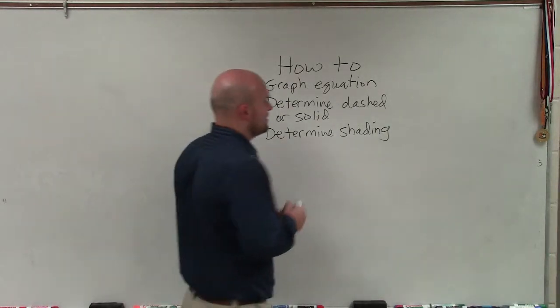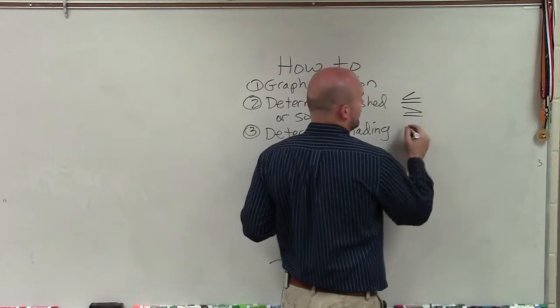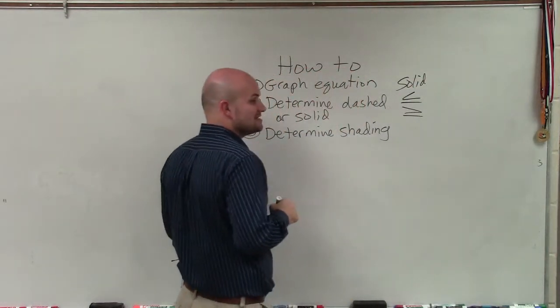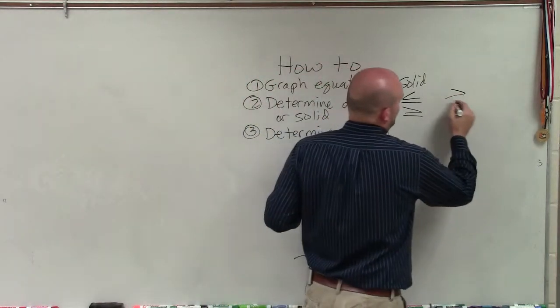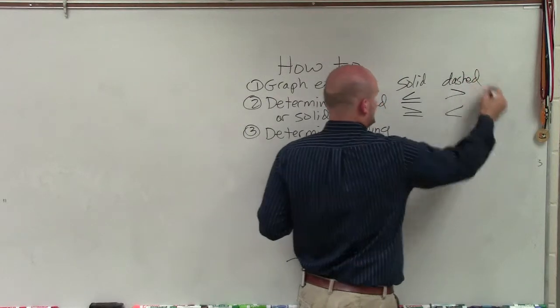The easiest way to determine if it's solid or dashed is to look at the inequality sign. If your inequality sign is less than or equal to or greater than or equal to, then it's solid. If it's less than or greater than, then it's dashed.